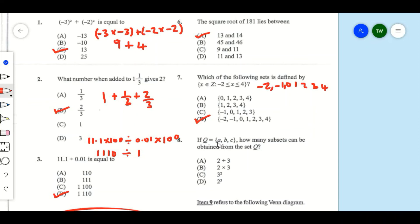Number 8: If Q = {a, b, c}, how many subsets can be obtained from set Q? The formula for subsets is 2^n, where n is the number of elements inside the set. Here we have three elements, so clearly A cannot be the answer, B cannot be the answer. It's between C and D, and C cannot be the answer since the formula is 2^n. So it's D, which is 2³. Our answer is D.